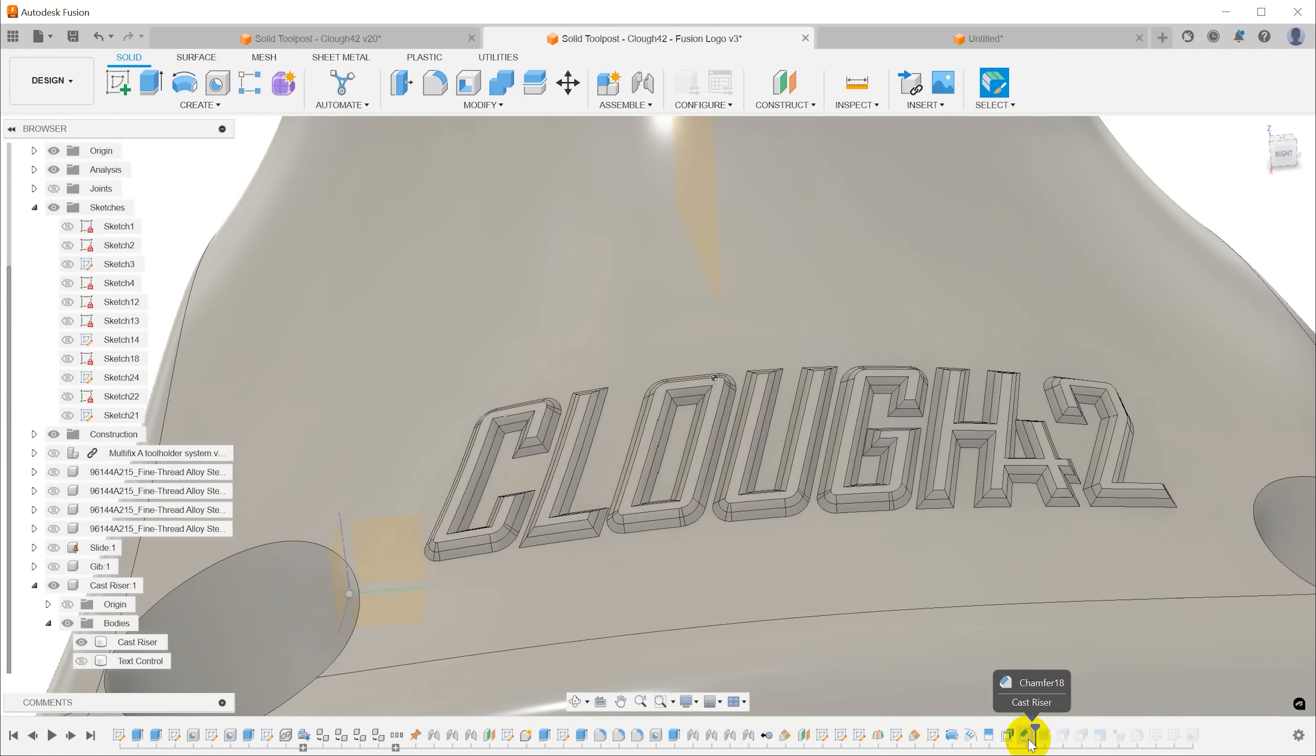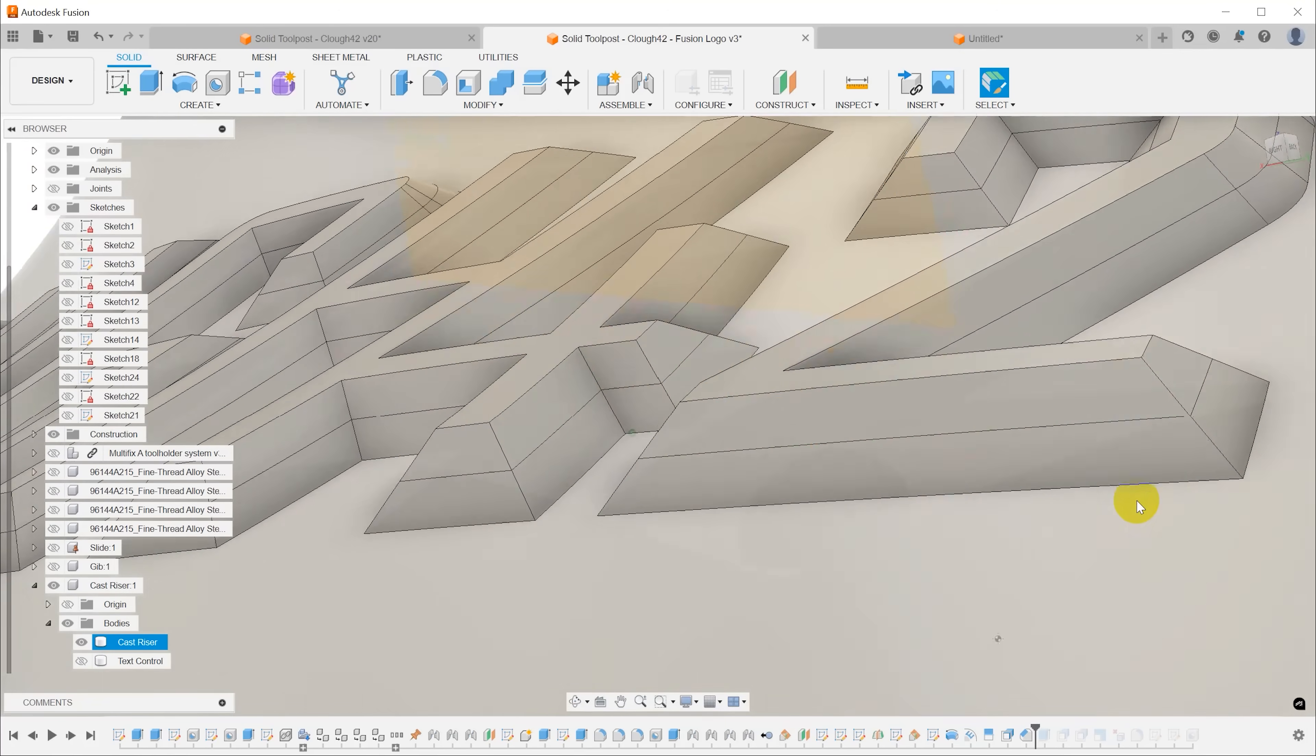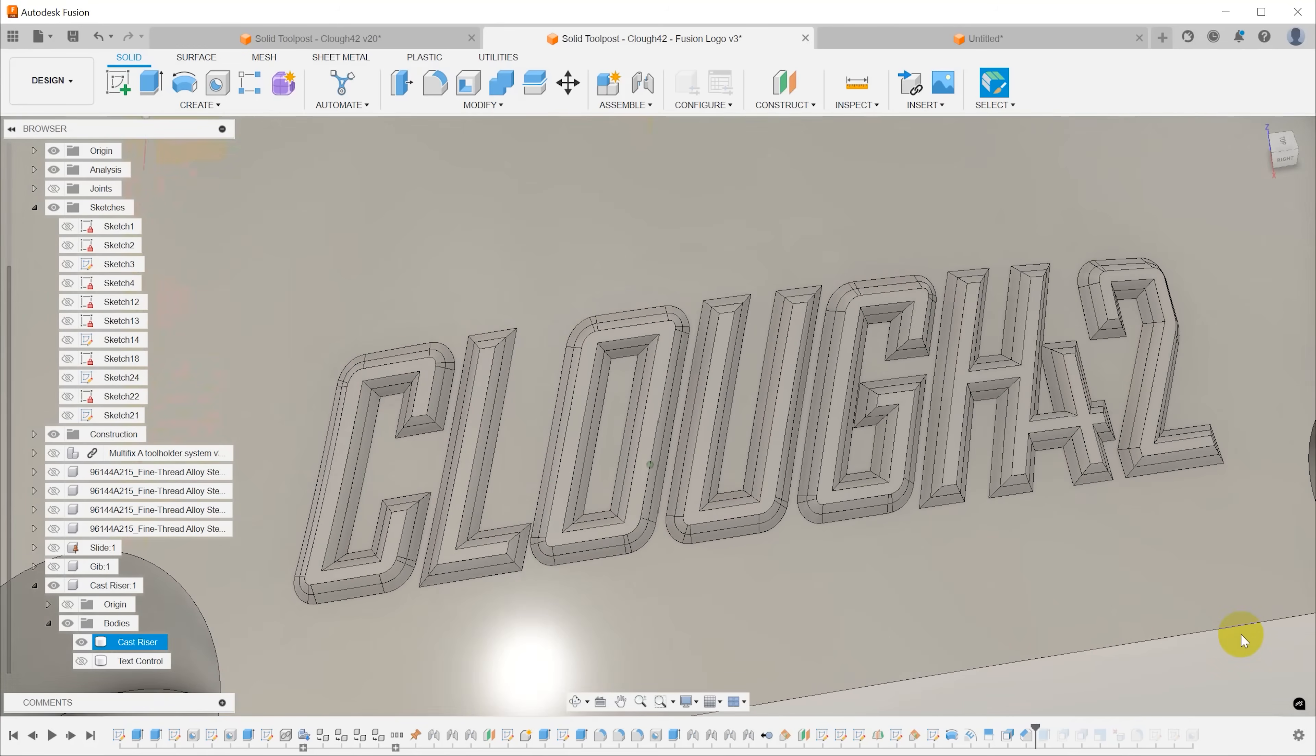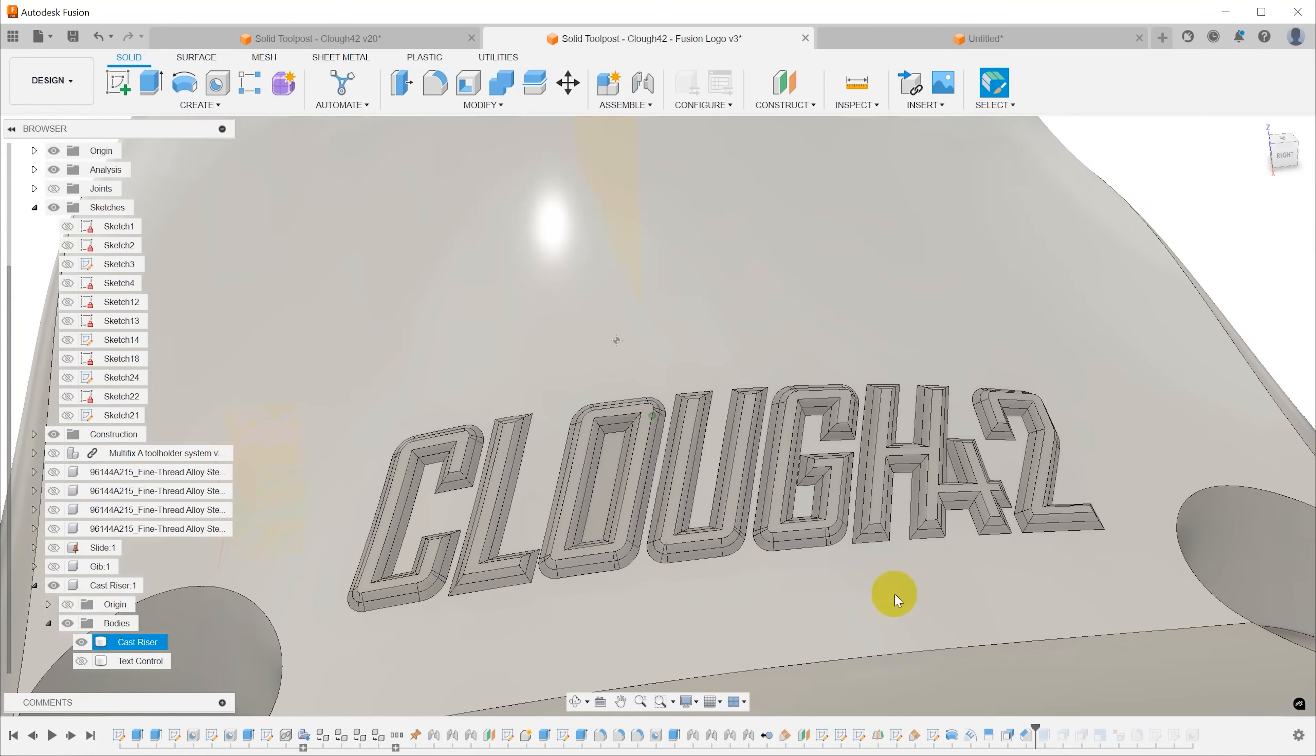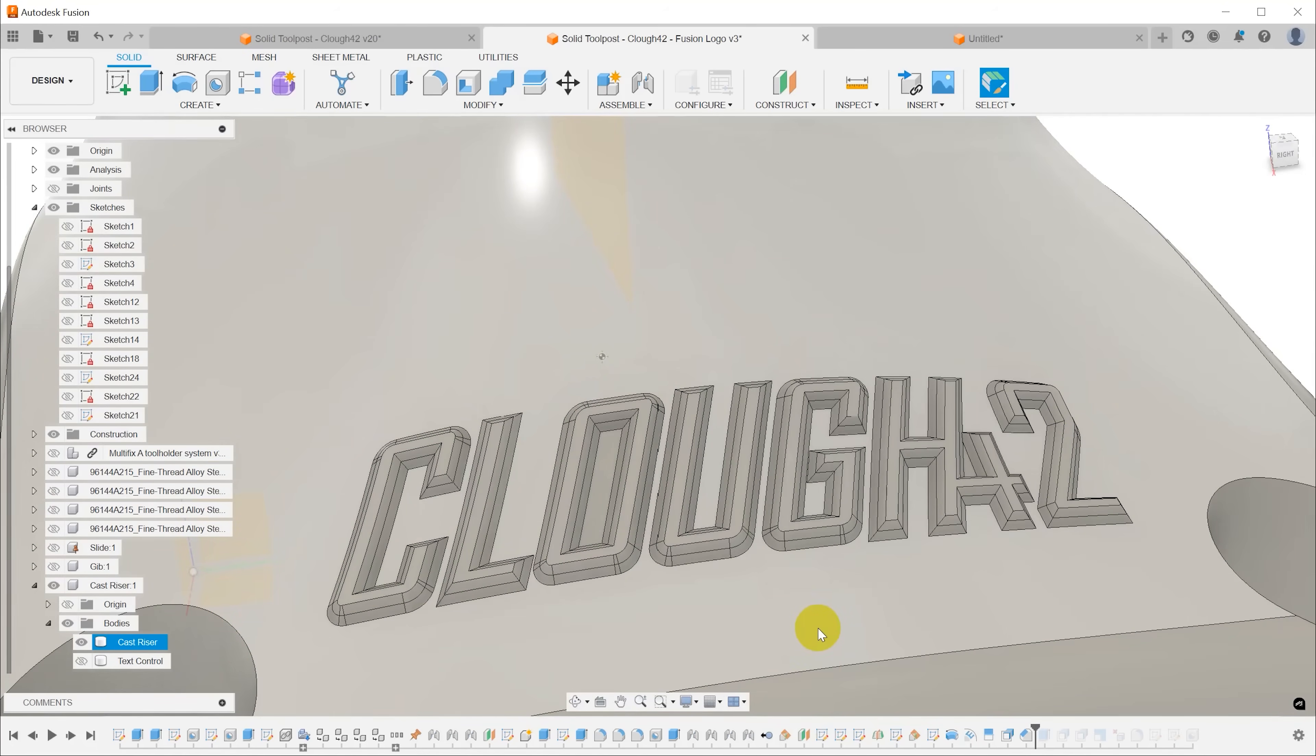So now we're back to the same point we were before. I have the text extruded off of the surface, and we just need to chamfer it. But unlike before, the geometry here is clean, and it doesn't have little artifacts that came from the font. So now I can just use a single chamfer operation, and this came out clean on the first try with no drama whatsoever. Your Fusion computation engine will thank you.